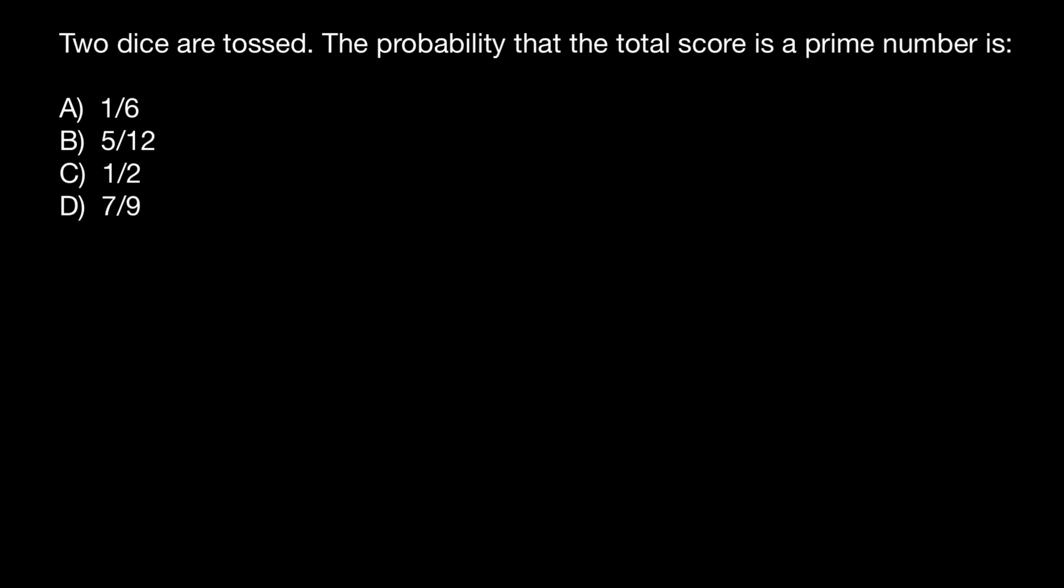I won't start today with common mistakes that people usually do solving such type of problems. For example, they start with listing all the numbers like this: 1, 2, 3, 4, 5, 6, 7, 8, 9, 10, 11, and 12. And here's the first mistake, because when we toss two dice, we cannot get one, because minimum what we can get is two. Two dice with one on each side would give us two. So we have to cross this one.